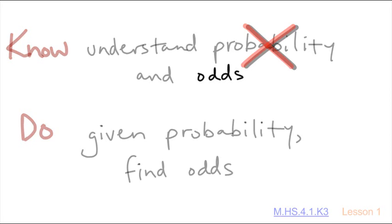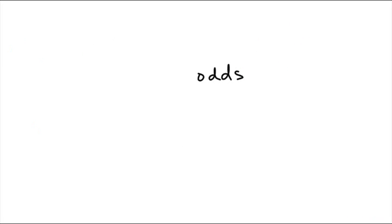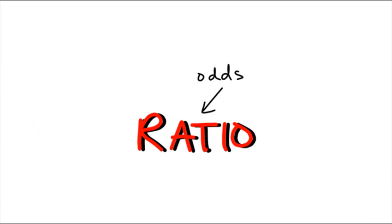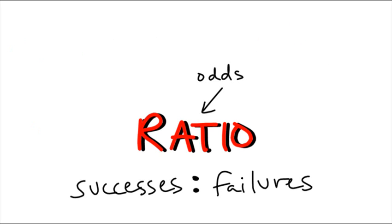Next we're going to talk about odds. Odds comes in the form of a ratio, and that is successes to failures. So a little different from probability, though they are similar.